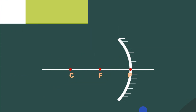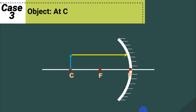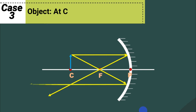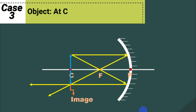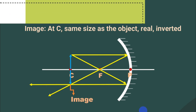In case 3, the object is located at the center of curvature C. The first light ray is parallel to the principal axis and is reflected passing through the focus. The second ray passes through the focus and is reflected parallel to the principal axis. When an object is placed at the center of curvature, the image is also formed at the center of curvature, below the principal axis. Since the image distance equals the object distance from the mirror, the image and the object have the same size. The image is real and inverted.